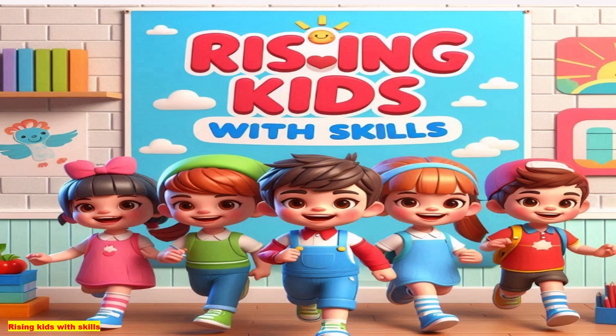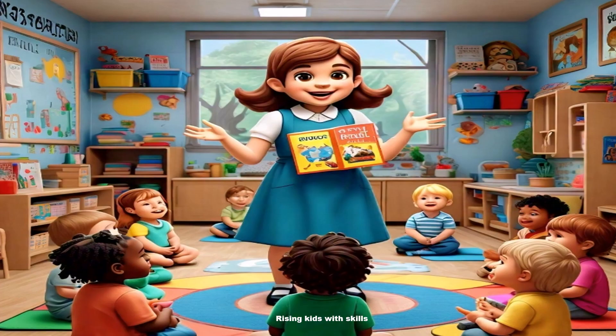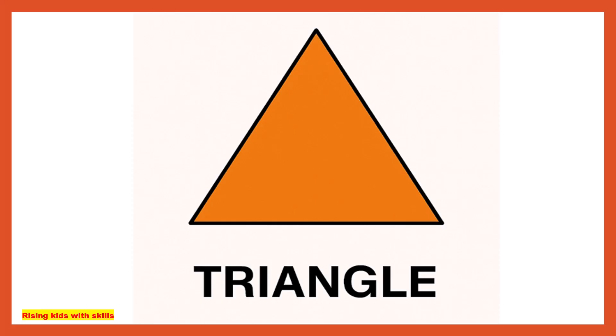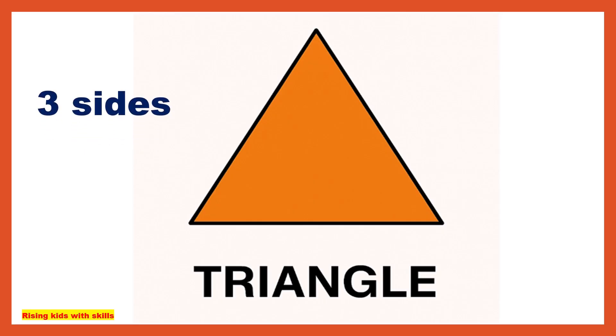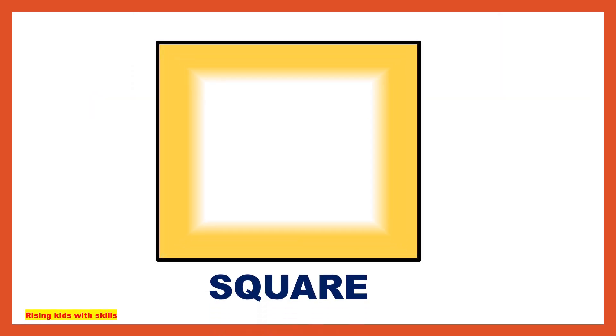Welcome to Rising Kids with Skills! Today we are going to learn different types of shapes. Let's start. This is called a triangle, a shape with three sides and three corners. This is called a square, a shape with four equal sides and four corners.